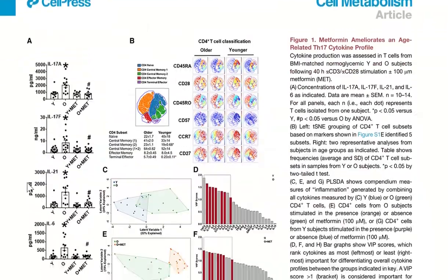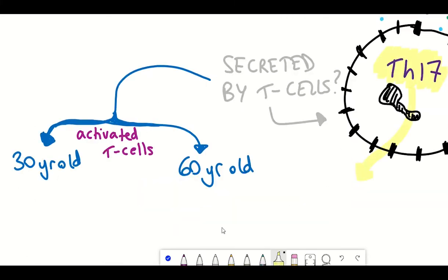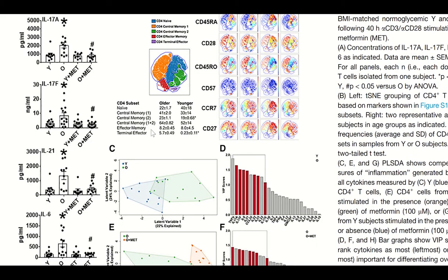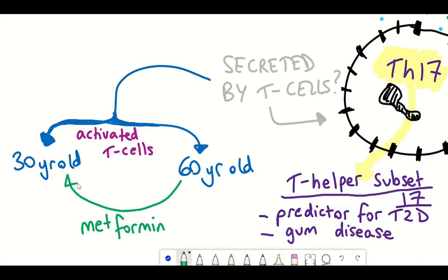Looking at this figure, we can see that in the older T cells there were higher secretion levels of interleukin-17A, 17F, 21, and 6. These are associated with the TH17 subset of T helper cells, whose presence is used as a predictor for type 2 diabetes and also promotes gum disease. However, when the older T cells were given metformin at the same time they were activated, the levels of these cytokines reduced to the same level as seen in the young T cells.